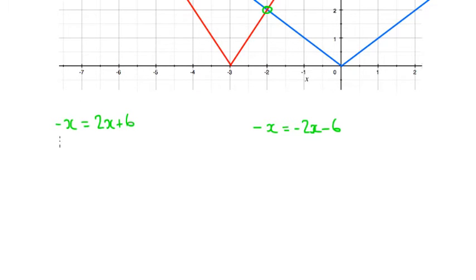So if we solve these two equations, that's going to give us the x values that we're looking for. If I take away 2x, I'll have minus 3x equals 6. So x is equal to minus 2.